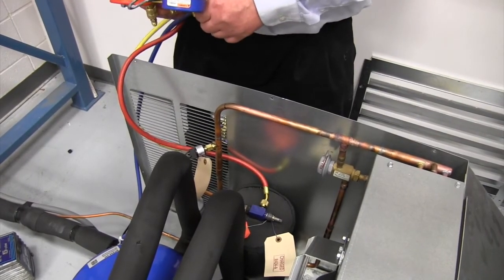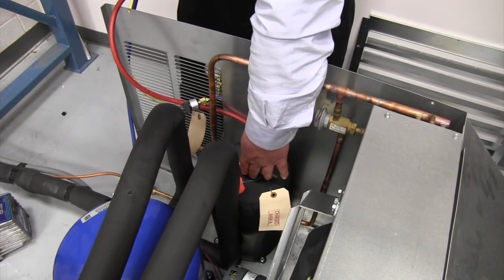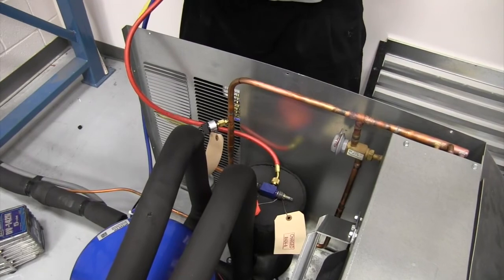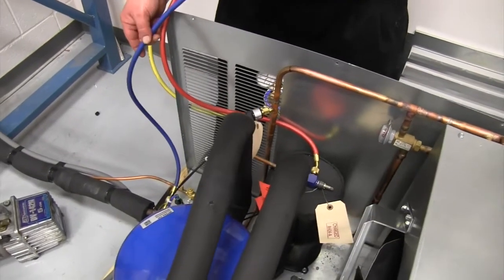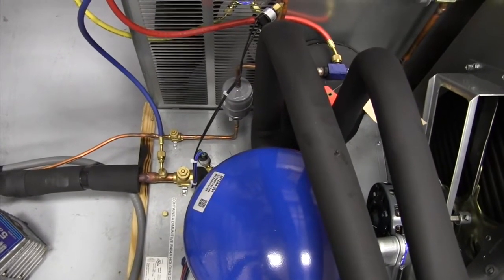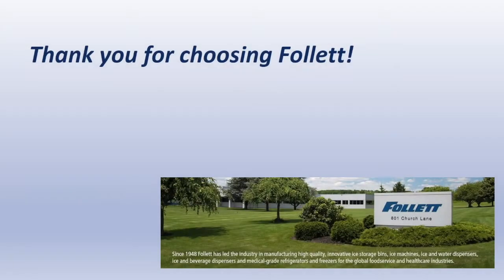You're first going to start by adding liquid to the king valve on the receiver. And then the remainder of the charge is going to be put in through the Schrader valve just ahead of the suction service valve on the outdoor condensing unit. Then we're ready to go.